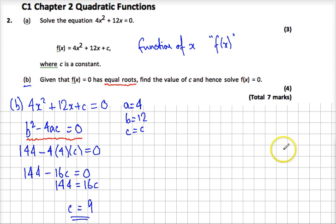Okay, so let's put a dividing line down here. Find the value of c, so we've done that bit. And hence, that just means following on from what you've just done, solve f(x) = 0. So we know that f(x) is 4x² plus 12x plus the value of c, which we worked out to be 9, is equal to 0. So now we're solving that. Three methods of solution. Let's try and factorize first.